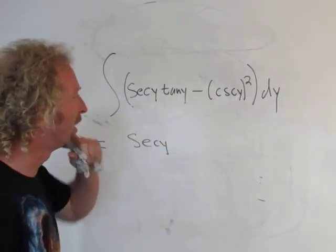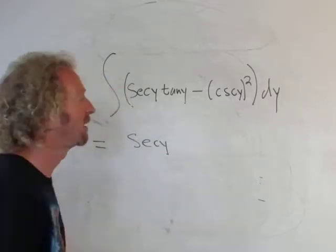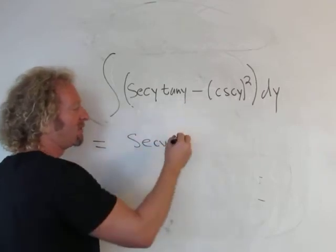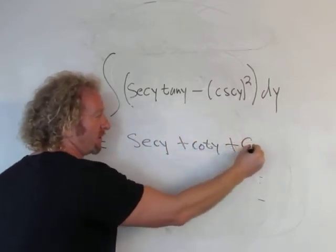What about cosecant squared? Well, the derivative of cotangent is negative cosecant squared, right? So here you already have a negative, so it's just plus cotangent y plus C and that's it.